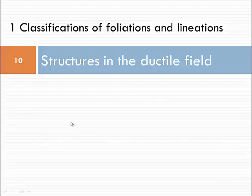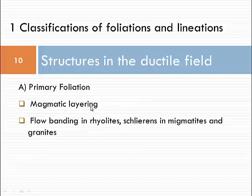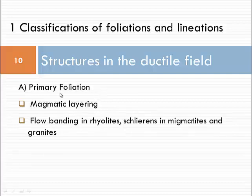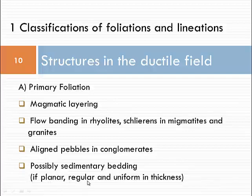Here we are going to look at the naming and classification, and also to some extent at the formation of foliations and lineations. These are structures essentially forming in the ductile field. Like with all structures, we have primary structures and secondary structures for foliations. Foliations are planar, regularly occurring, and uniform features — specifically their thickness should be more or less uniform.